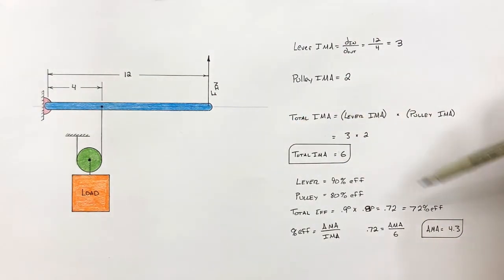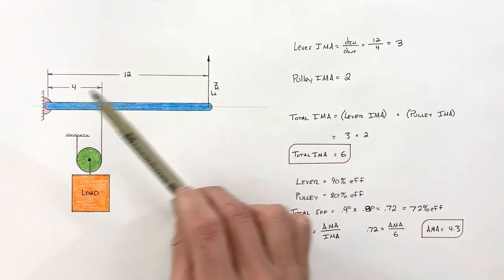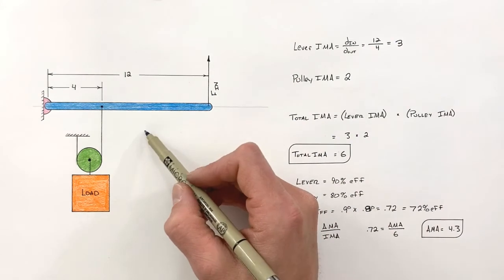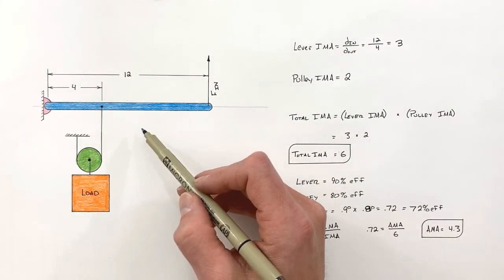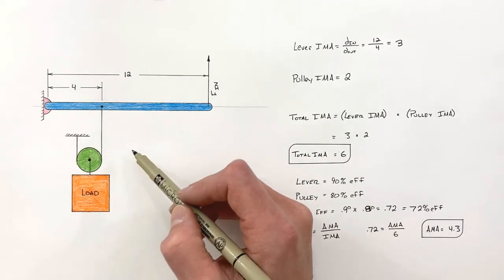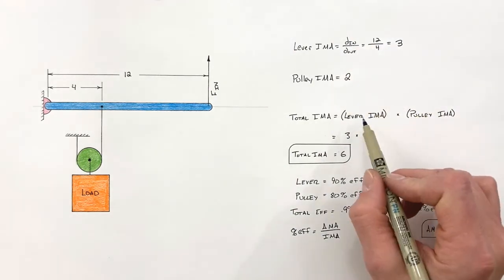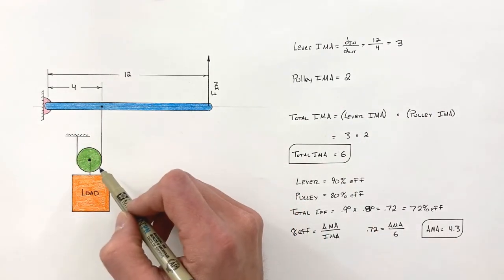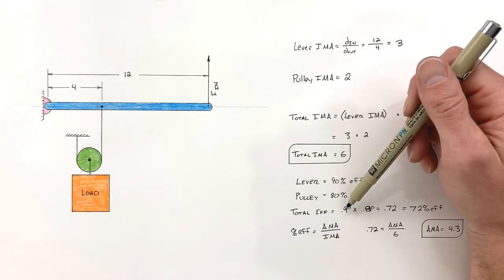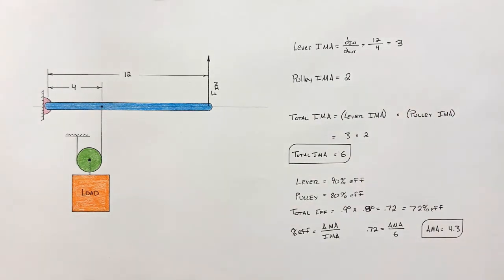Knowing both the IMA and the AMA, we can find both the distance we'd need to move the end of the lever to lift a load a certain distance, and how heavy a load we could lift for a given force. Each compound machine is unique — this was just one example. To find the total IMA of any compound machine, we simply multiply together the IMAs of all the individual simple machines. Similarly, to find the overall efficiency, we multiply together the efficiencies of each individual simple machine. That is how we calculate the IMA and AMA of a compound machine.